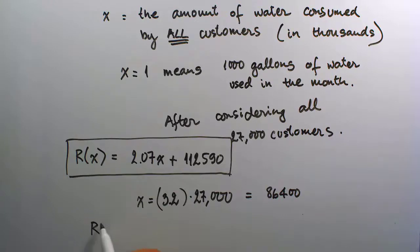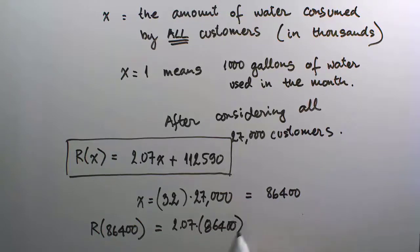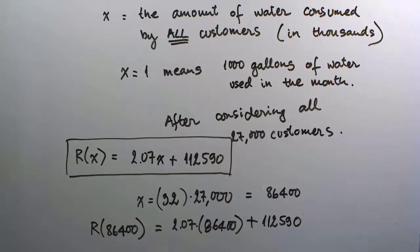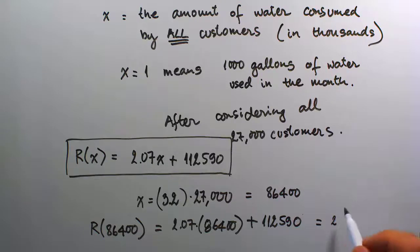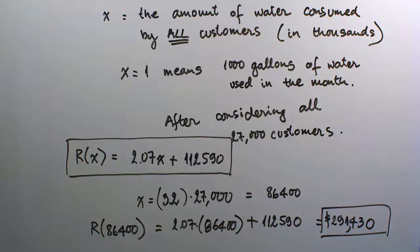Substituting x = 86,400 into our revenue function gives R(86,400) = 2.07 times 86,400 plus 112,590. The calculation comes out to $291,430. So the company should be earning hundreds of thousands of dollars per month, which makes sense for a company of this size.